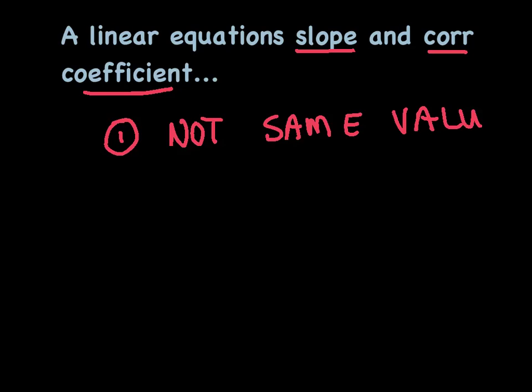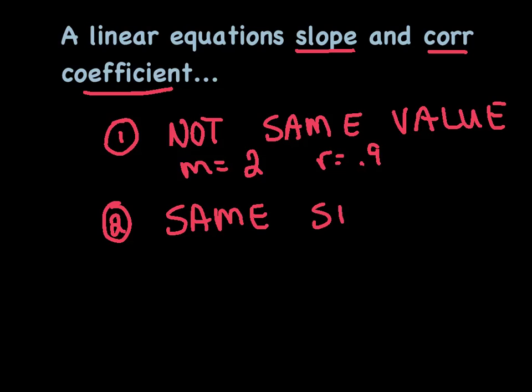For instance, you might have a slope of, you know, 2, but of course, R can't be bigger than 1. So maybe your R value ends up being 0.9 or something like that. So they're not the same value. However, they will have what I call the same sign.